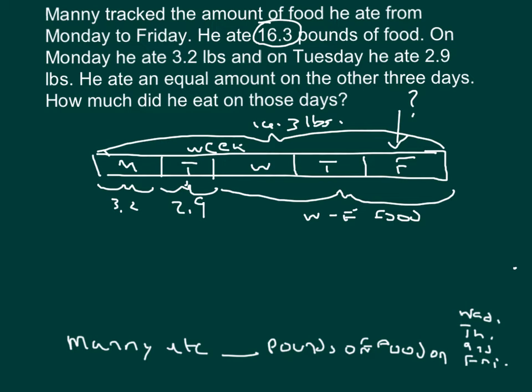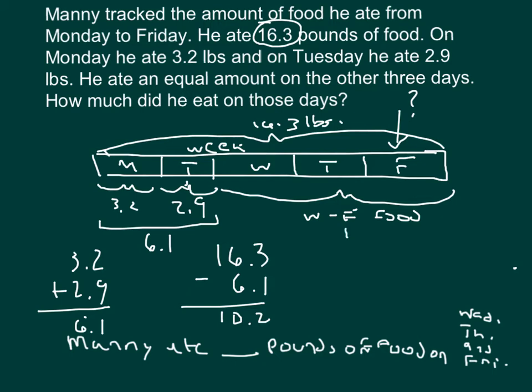So looking at our numbers here, we have this total here of 16.3 pounds of food. And then we're going to go ahead and start by taking these amounts here, that he ate on Monday and Tuesday, and subtracting that from the 16.3. So let's do this first, and combine the total amount of food that he ate on Monday and Tuesday. 3.2 plus 2.9, equaling 6.1 pounds of food for Monday through Friday.